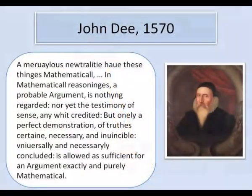But here's John Dee, writing in 1570, marvellous neutrality have these things mathematical. In mathematical reasonings, a probable argument is nothing regarded, nor yet the testimony of sense any whit credited, but only a perfect demonstration of truths certain, necessary and invincible, universally and necessarily concluded, is allowed as sufficient for an argument exactly and purely mathematical.